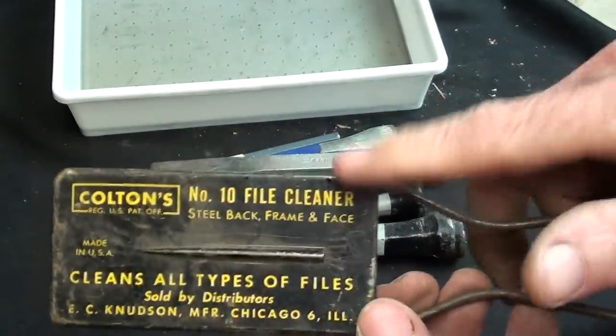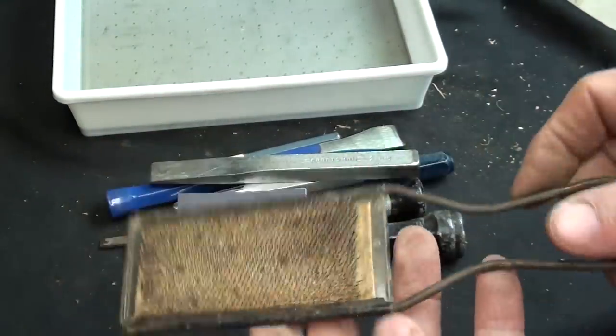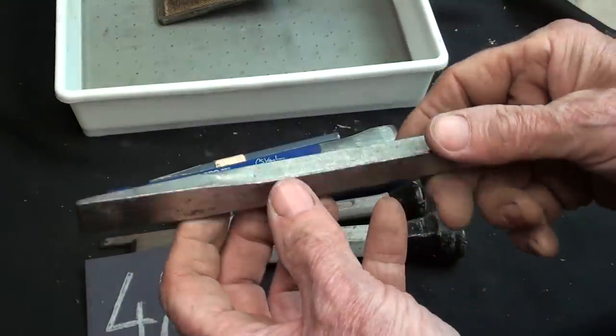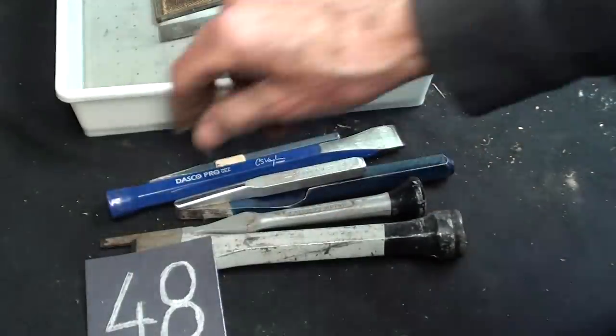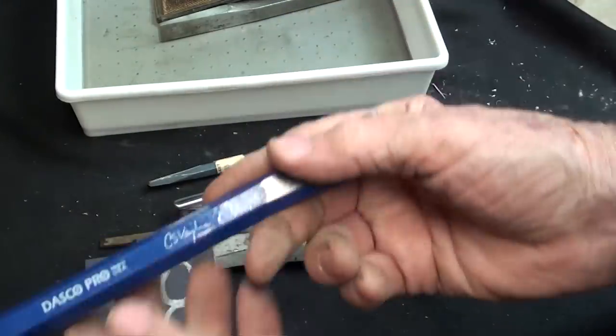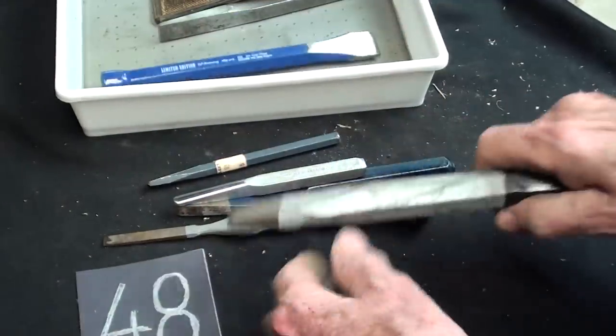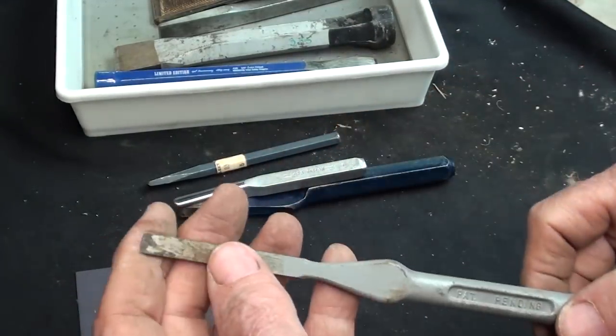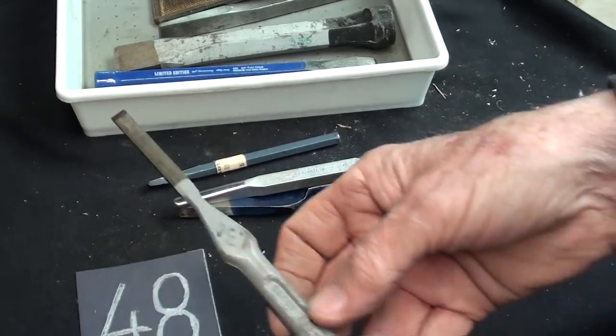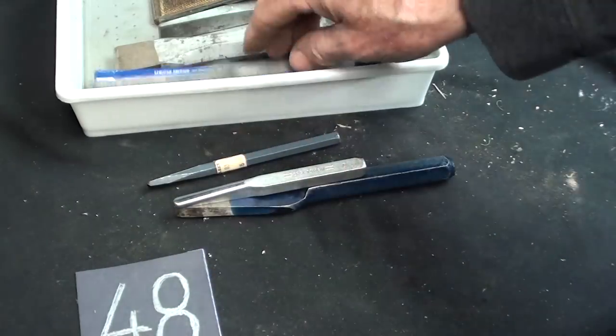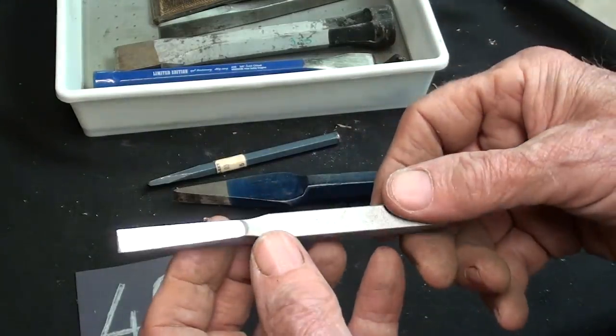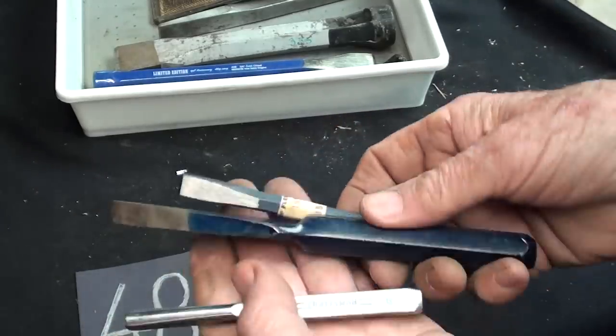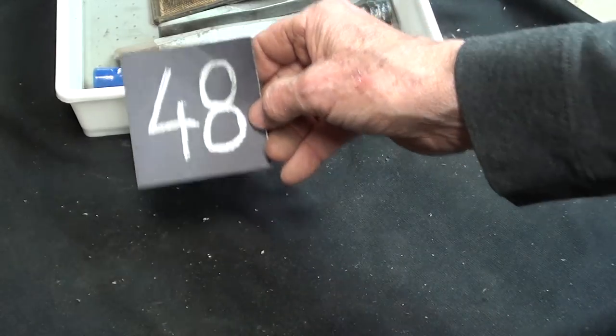Number 48, you get a Colton file cleaner without the little probe, but in good shape. Craftsman chisel, used. That's new. Dasko. There's a nice one. I think that's a Dasko. This looks like a wood chisel. I've never used it. You don't have to worry about breaking the wood or plastic handle though, do you? So we got, that's brand new. So all of that for 48.